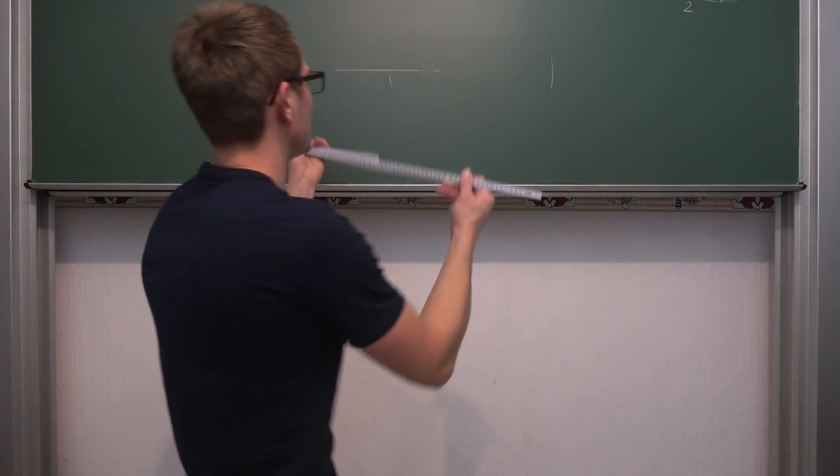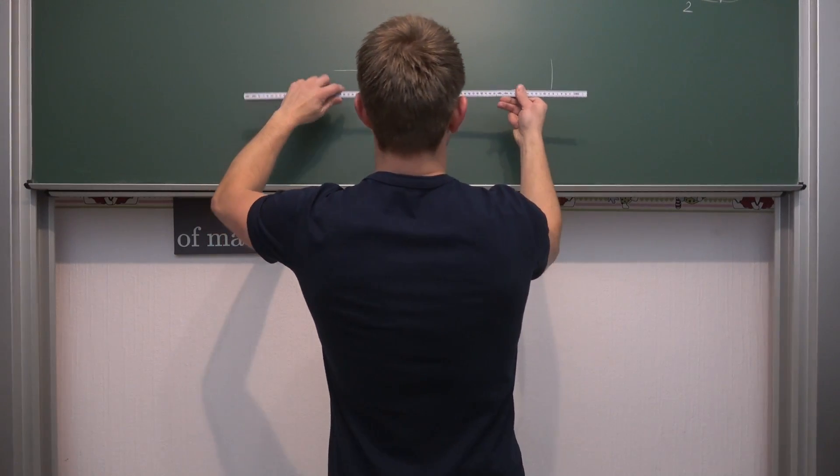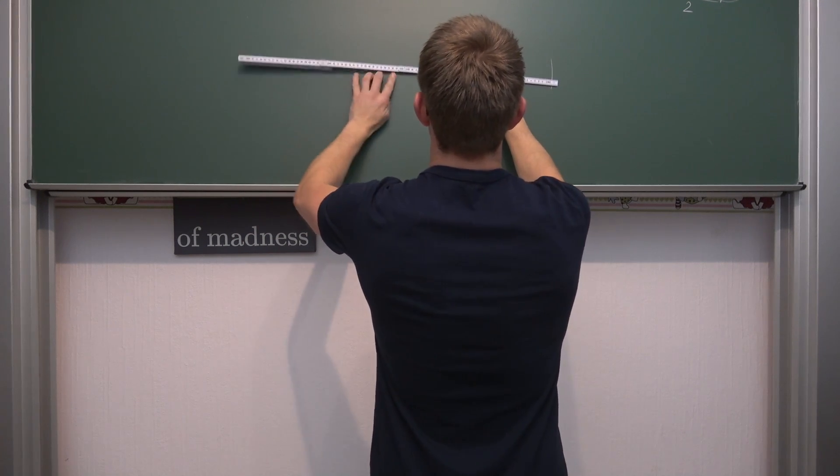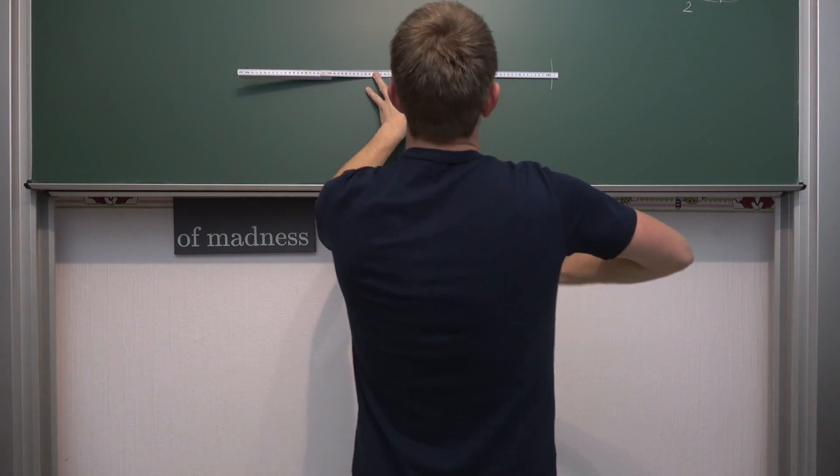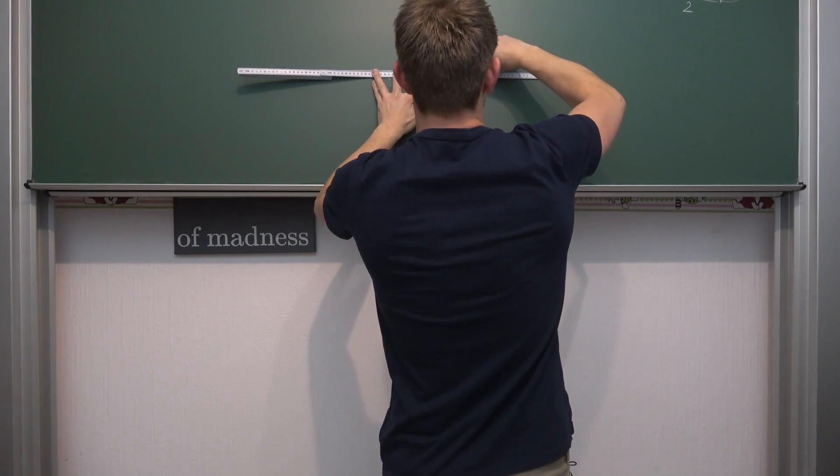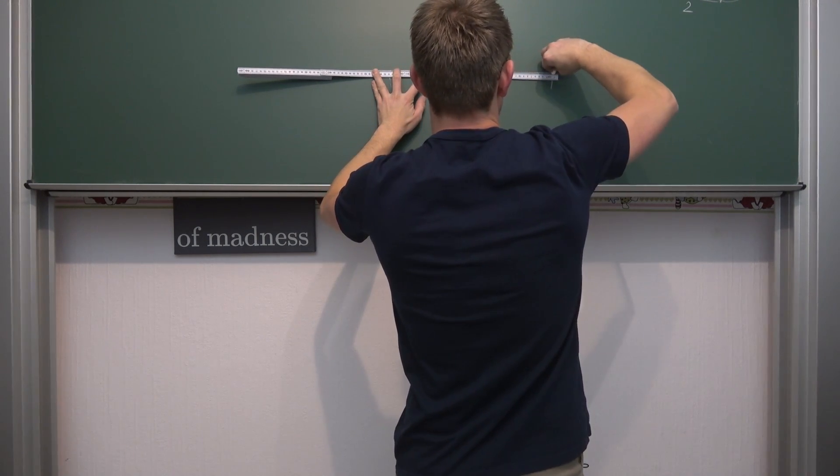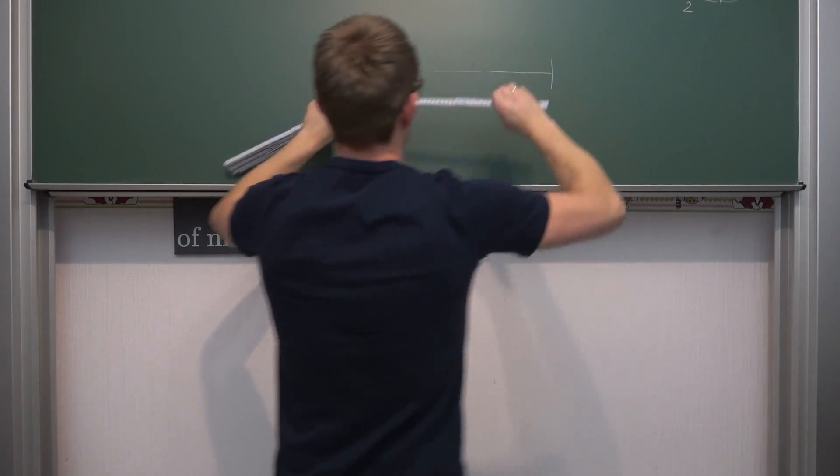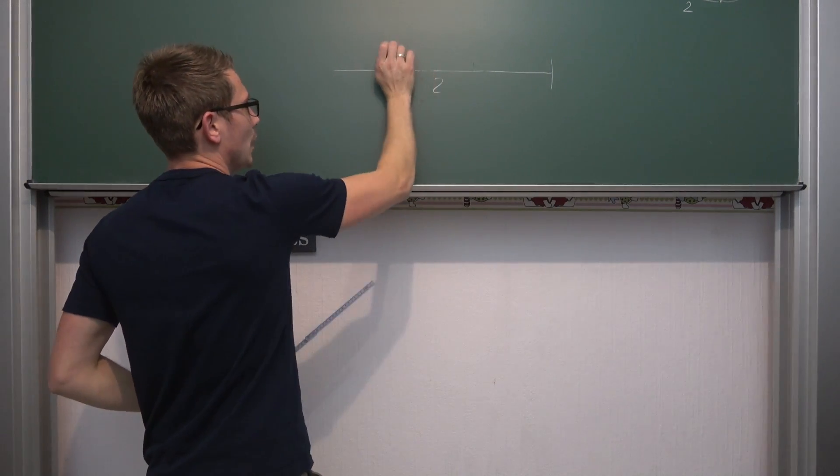And now what we can simply do is we can take our infinitely long straightedge and just extend our line. And voila, we got something of length 2 for example. This right here has length 2 now.